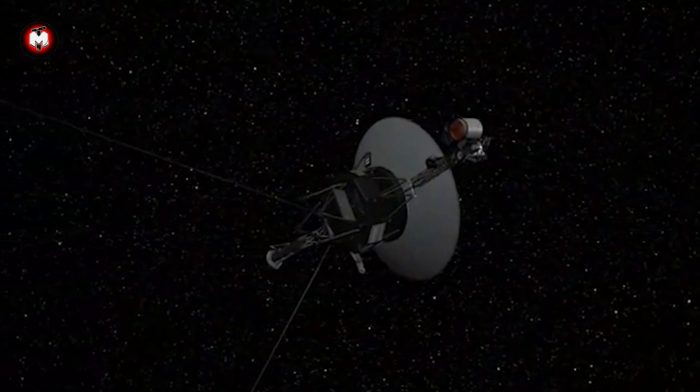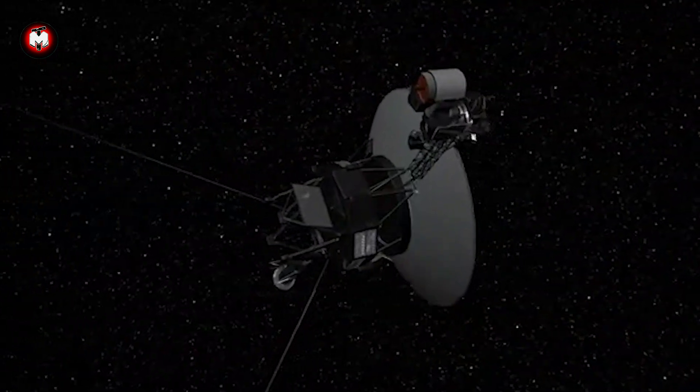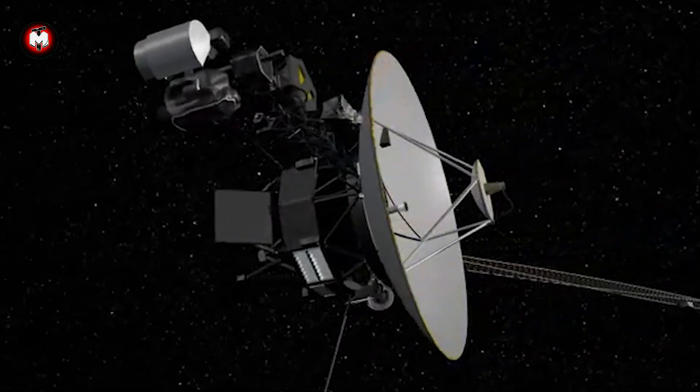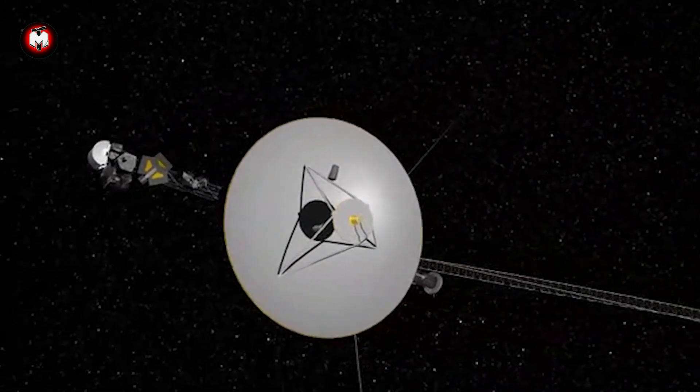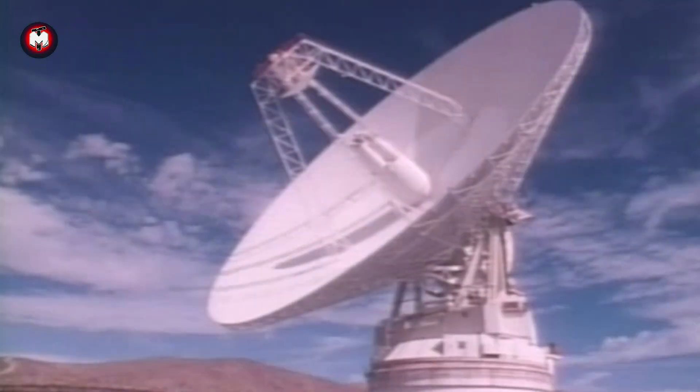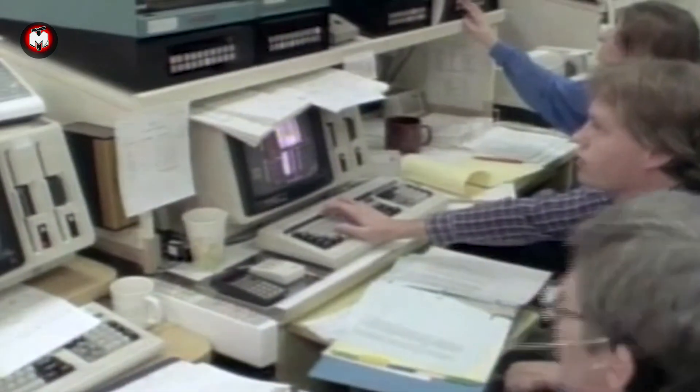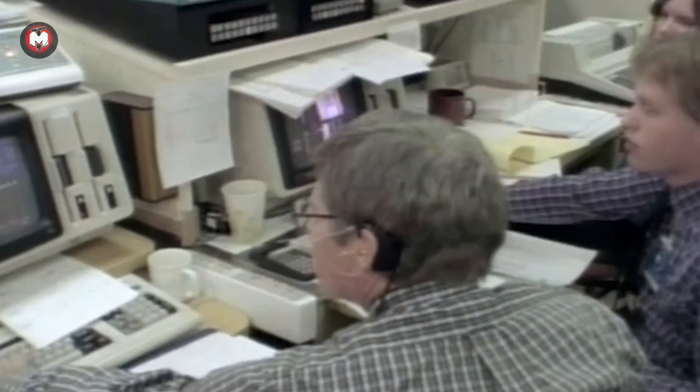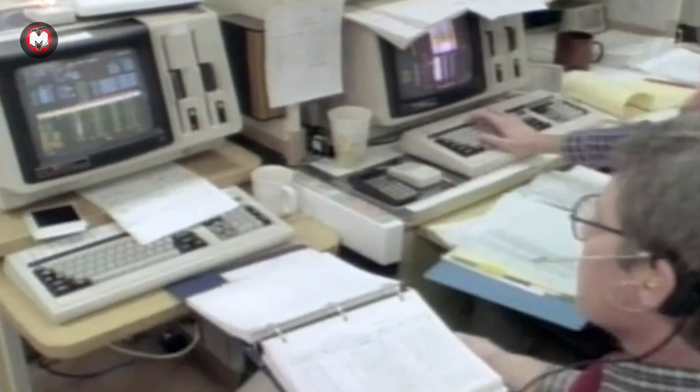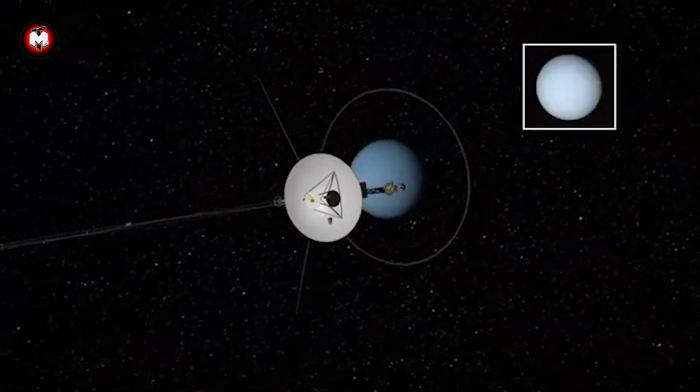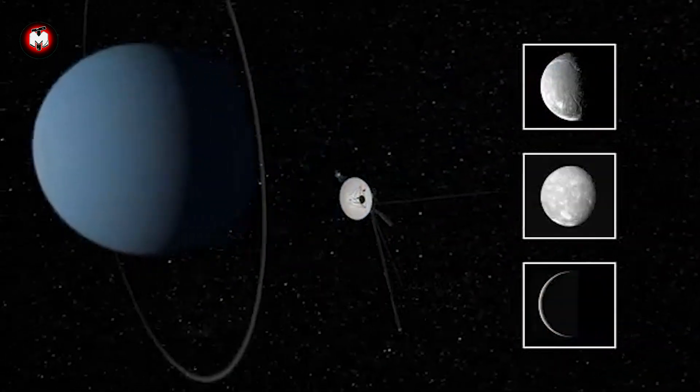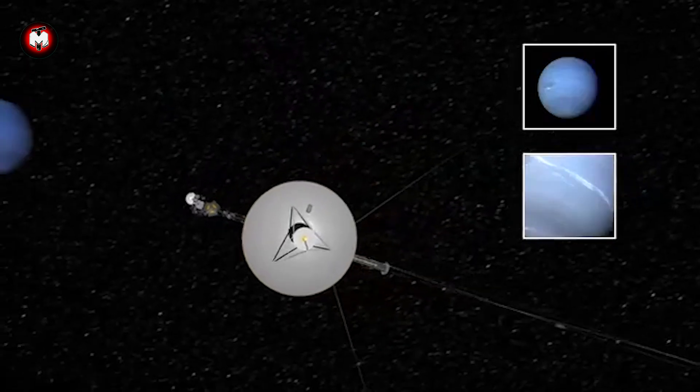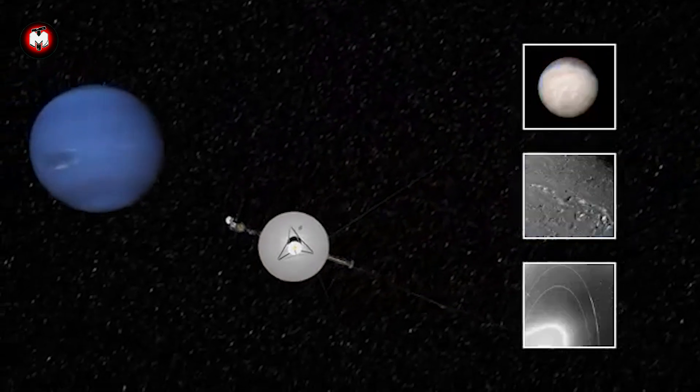These weren't just any spacecraft. Each Voyager was packed with cutting-edge 1970s technology. But here's what's mind-blowing: they were built with just 69 kilobytes of memory. To put that in perspective, that's about one-thousandth of what your smartphone uses to send a single photo. Their computers had less processing power than a modern calculator. Yet these machines were designed to navigate the solar system, take photographs, conduct scientific experiments, and beam data back across billions of miles using just a 23-watt transmitter, about as powerful as a refrigerator light bulb.